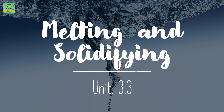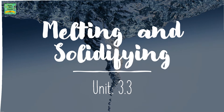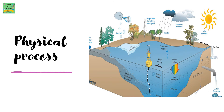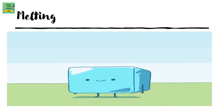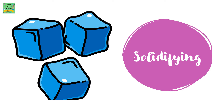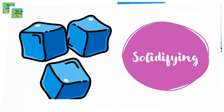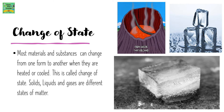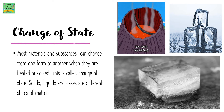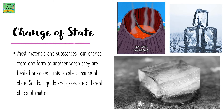Melting and solidifying, unit 3.3. Vocabulary: change of state. Physical processes. Change of state: most materials and substances can change from one form to another when they are heated or cooled. This is called change of state. Solids, liquids and gases are different states of matter.